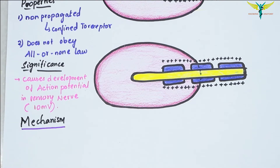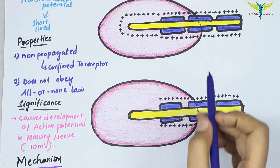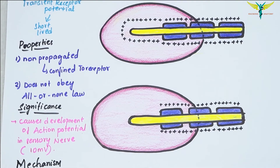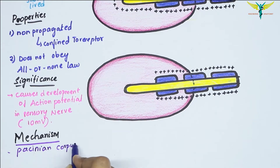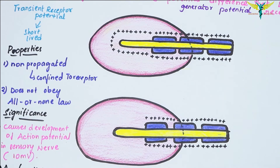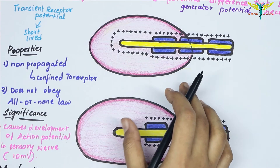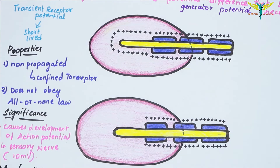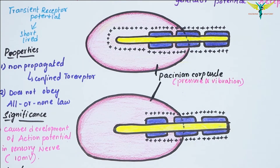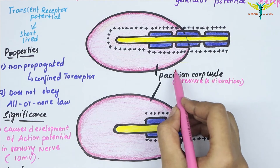To study the mechanism of the receptor potential, Pacinian corpuscles are generally used because of their large size and anatomical configuration. This is the diagram of the Pacinian corpuscle. Pacinian corpuscles are mechanoreceptors that respond to pressure and vibration.